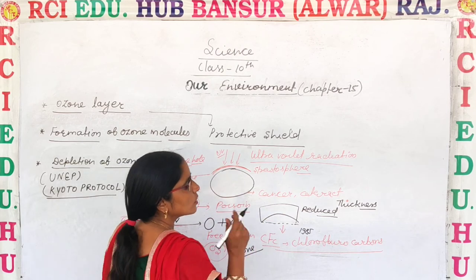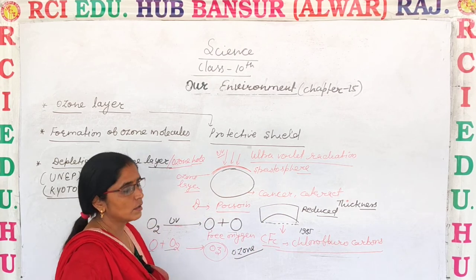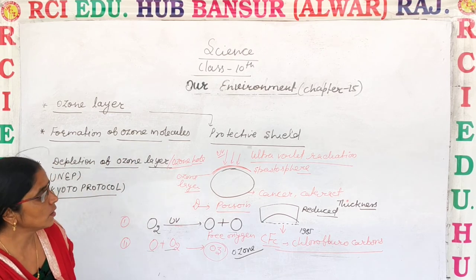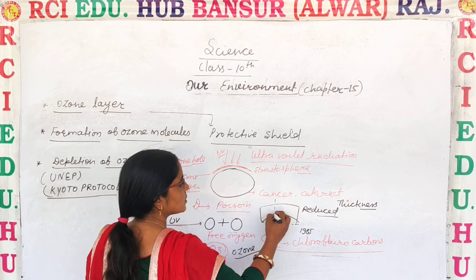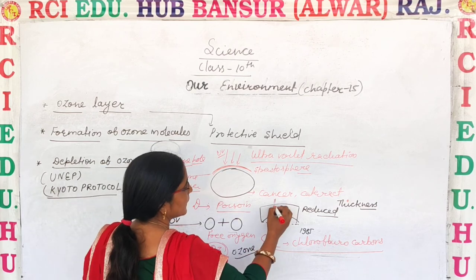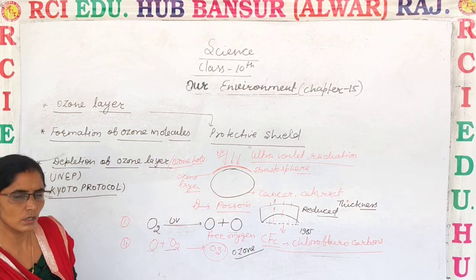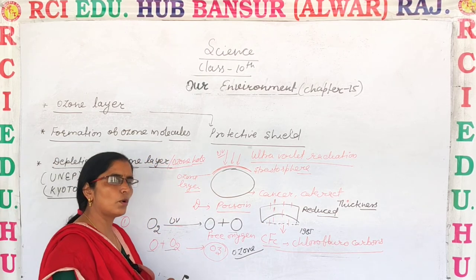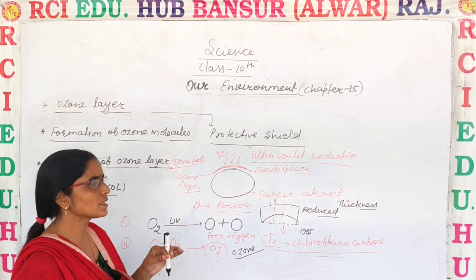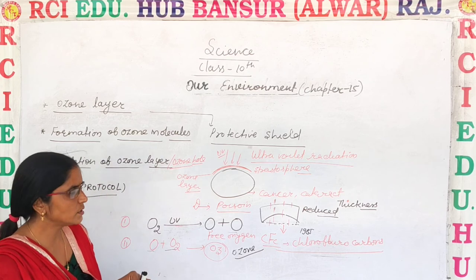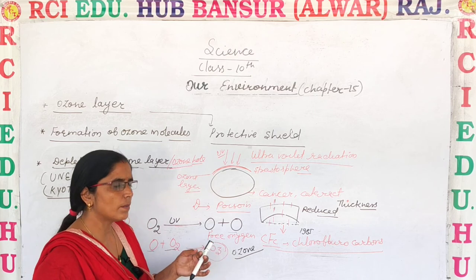This is a very concerning point. When the ozone is reduced, harmful ultraviolet radiation reaches directly to the earth. This causes ozone depletion problems such as cancer, skin pigmentation, skin allergies, and cataract.